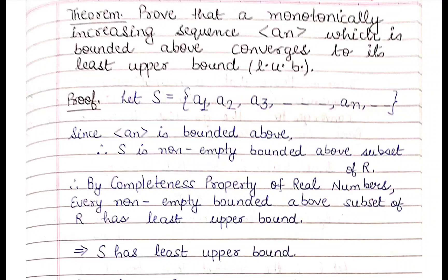A sequence that is either monotonically increasing or decreasing is called a monotonic sequence. Now, the first important theorem is: a monotonic sequence that is bounded will converge. If it is monotonically increasing and bounded above, then by the completeness property of real numbers, it will have a least upper bound — the supremum.